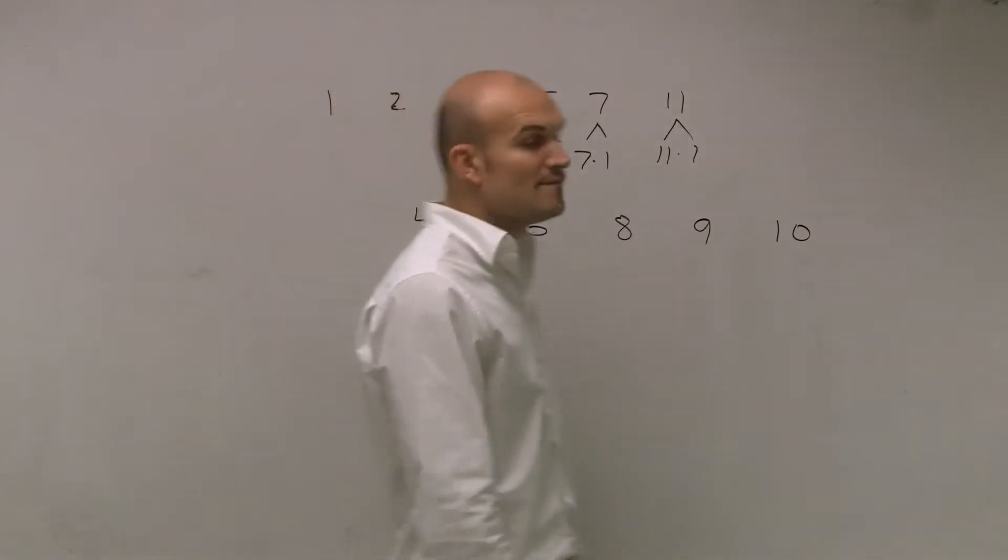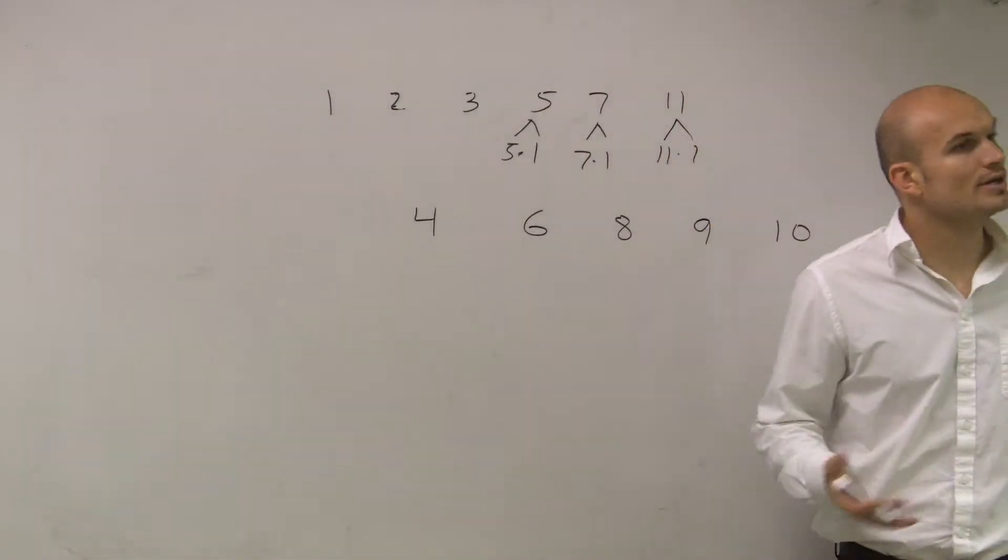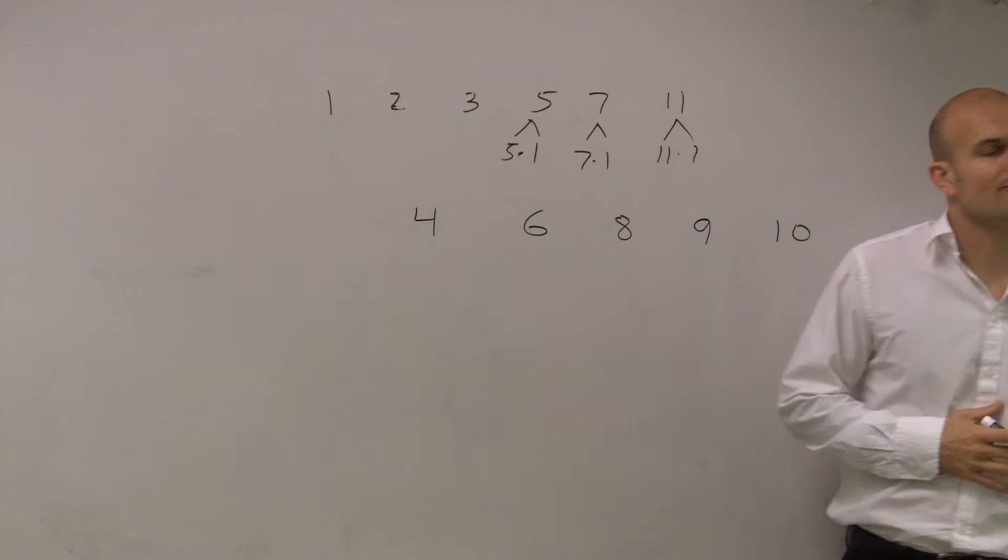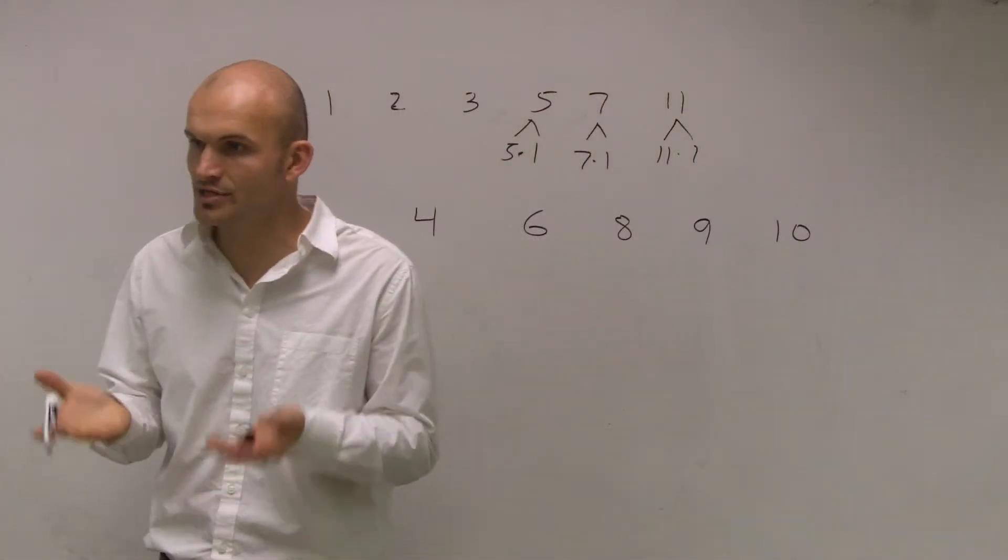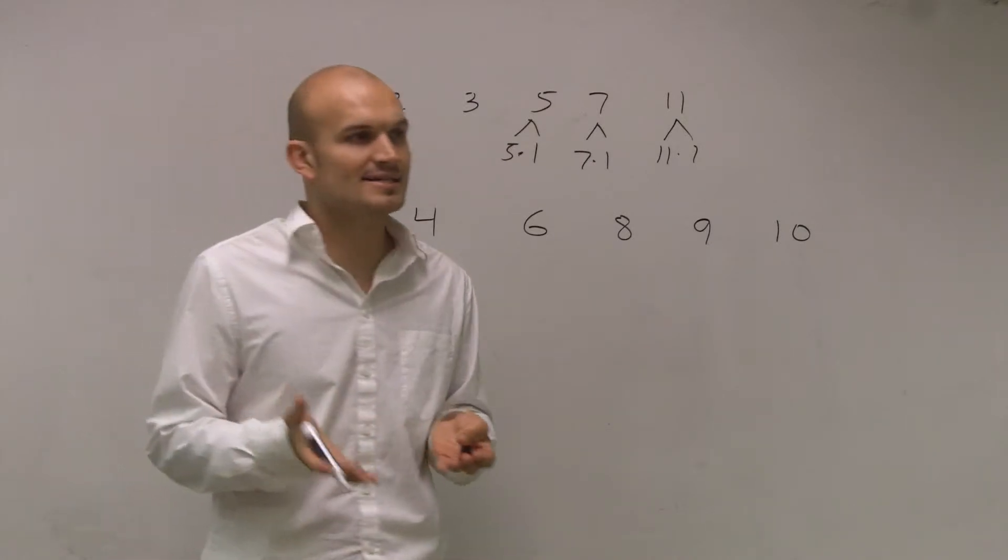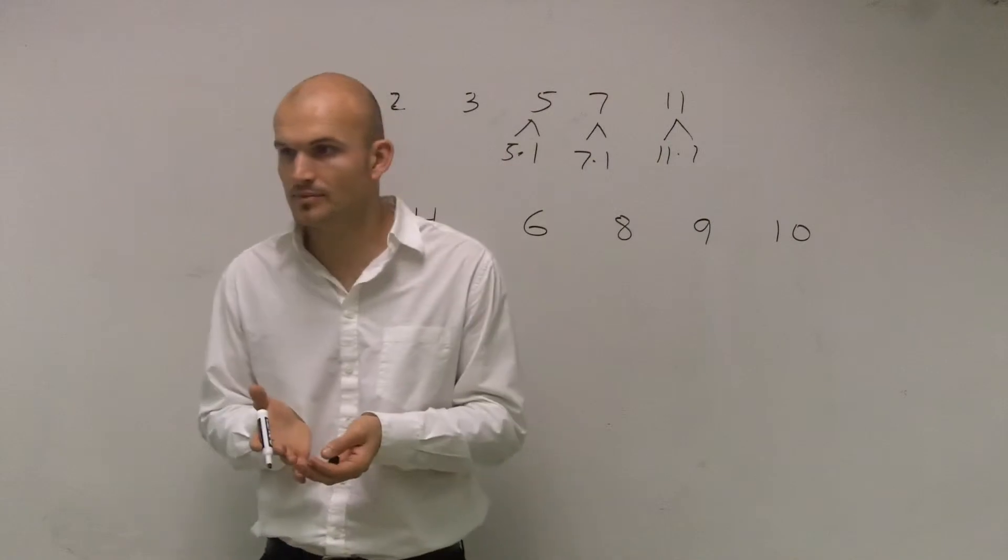So what we're going to do is work on factoring. When you have numbers that are not prime, we're going to work on factoring. What factoring does is we take the factors, the numbers that you can multiply to get a number, and write it as a product of those factors.